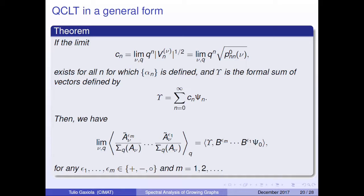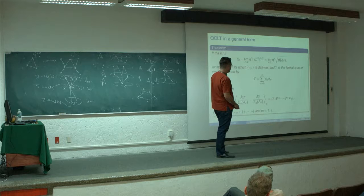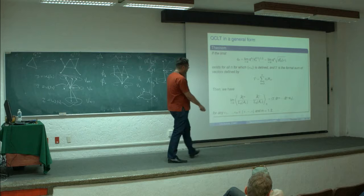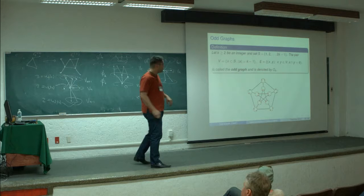Quantum central limit theorem: we define this number and this formal sum of operators. The distribution of the random variables defined before equals the distribution of this operator, but now with respect to a coherent state inner product.